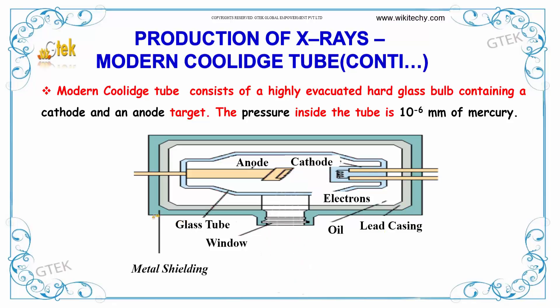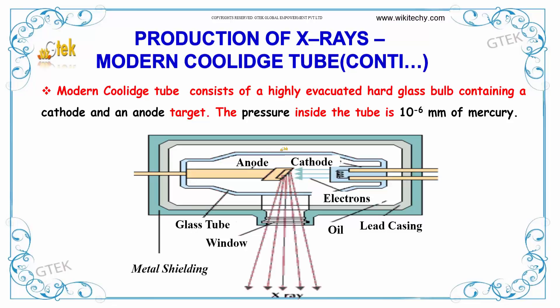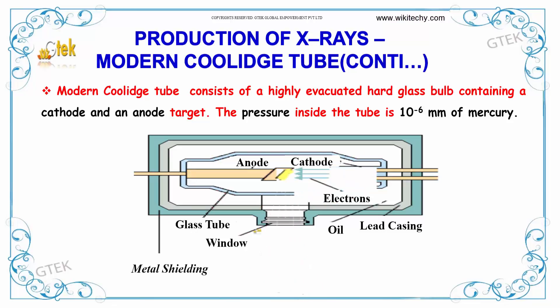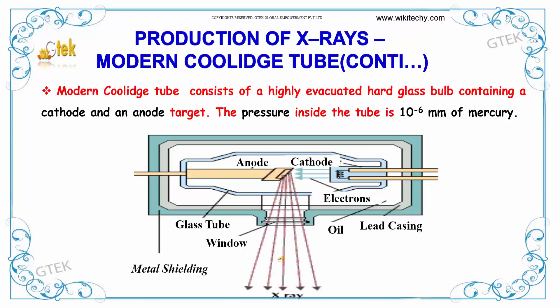This is the lead casing and this is the metal shielding. You can see the glass tube here. Through this window the X-rays are emitted.